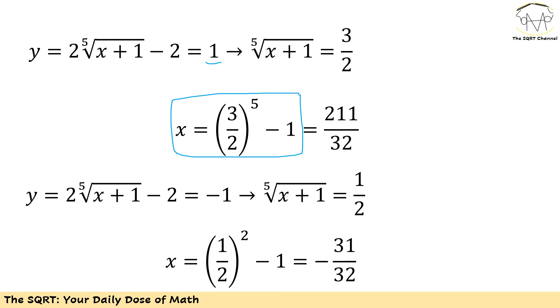You can see if I use negative 1 for y, I'm going to end up with negative 31 over 32 for x. Now the rest is going to be easy. I just need to add the two values that I got for roots.